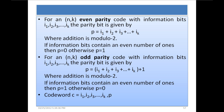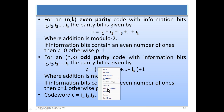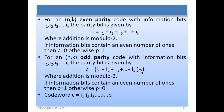For an (n, k) odd parity code with information bits i1, i2, i3, ..., ik, the parity bit is given by p = i1 ⊕ i2 ⊕ i3 ⊕ ... ⊕ ik ⊕ 1. The difference is only that plus 1 at the end; the rest of the method is the same. For even parity, we simply add the information bits using modulo 2 (XOR) addition. For odd parity, we add 1 to the resultant addition using modulo 2. If information bits contain an even number of ones, then p = 1, otherwise p = 0.